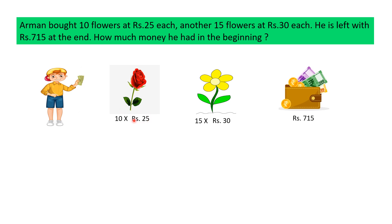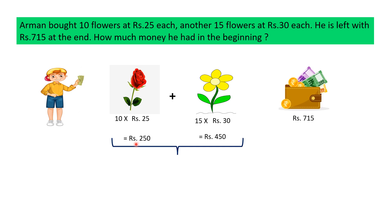Now, cost of 1 flower is Rs. 25. So, cost of 10 flowers will be 10 × Rs. 25, which is equal to Rs. 250. Cost of 1 flower is Rs. 30. So, cost of 15 flowers will be 15 × Rs. 30, which is equal to Rs. 450. So, total money spent is Rs. 250 plus Rs. 450, which is equal to Rs. 700.